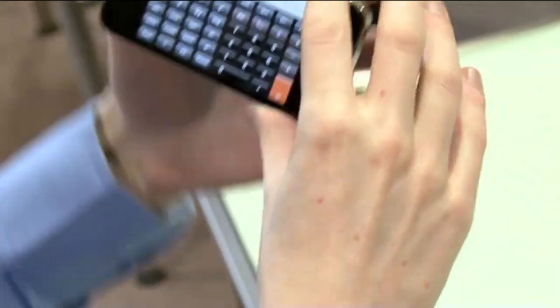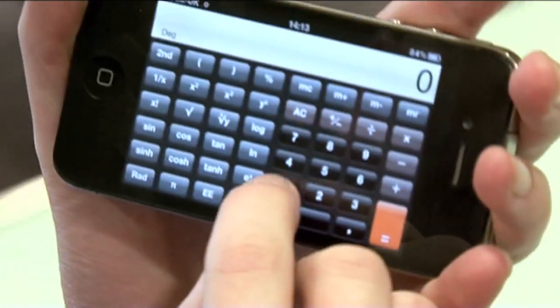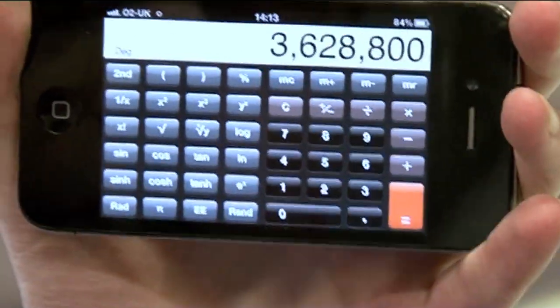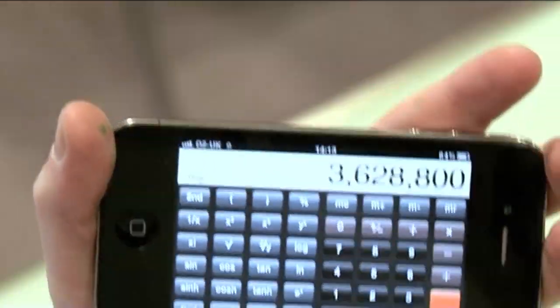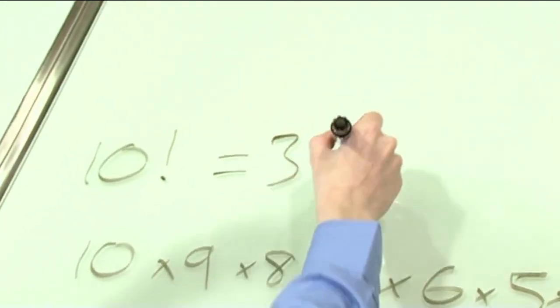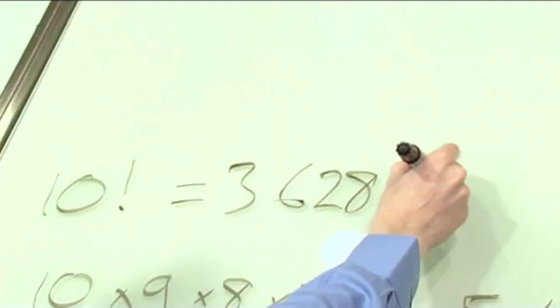How big is 10 factorial? On your calculator you will find a little button with an exclamation mark after it. There we go, that is how big 10 factorial is. Let's write this down. 3,628,800.